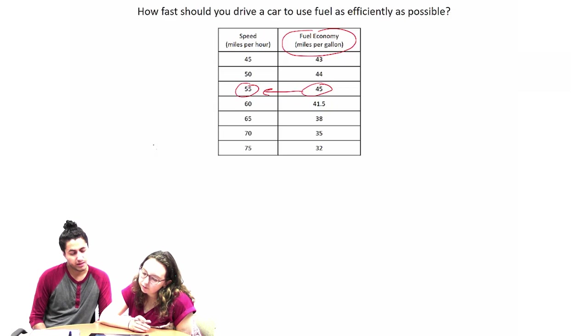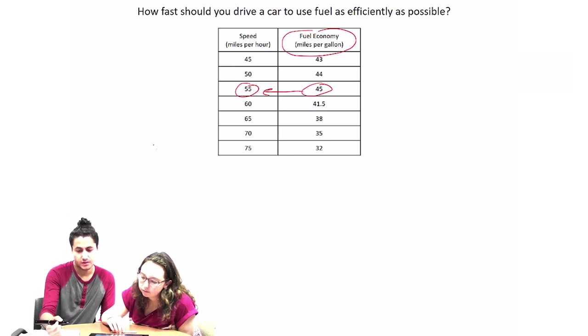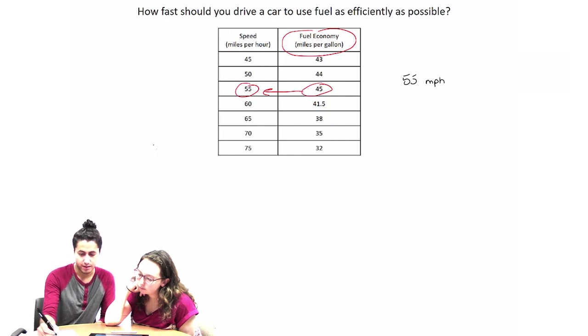But then, I'm looking at the other inputs in relation to this. If you have 55 miles per hour, that gets you 45 miles per gallon. If you look at 45 miles per hour, that gets you 43.